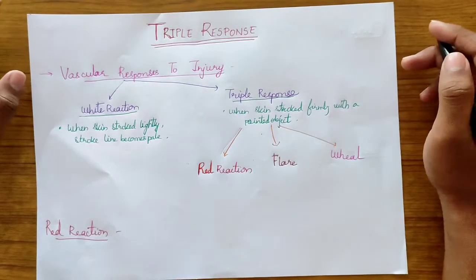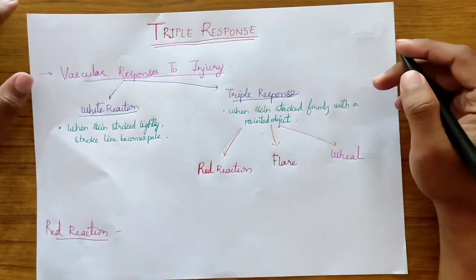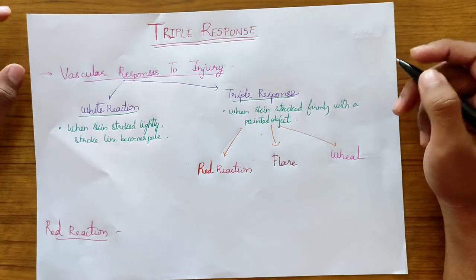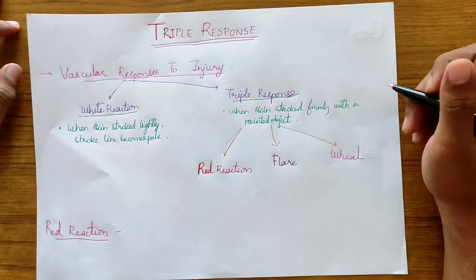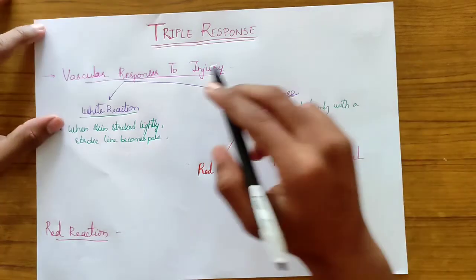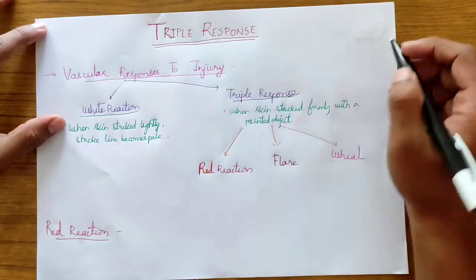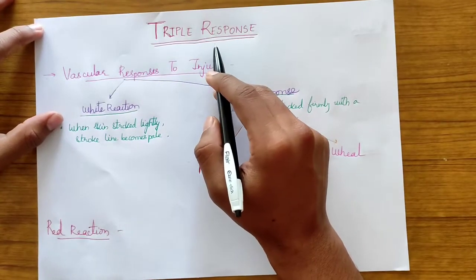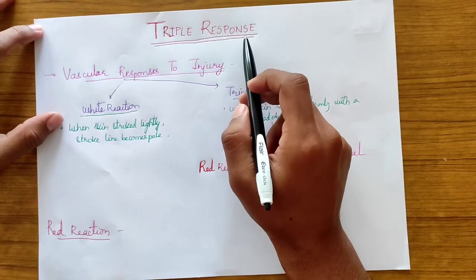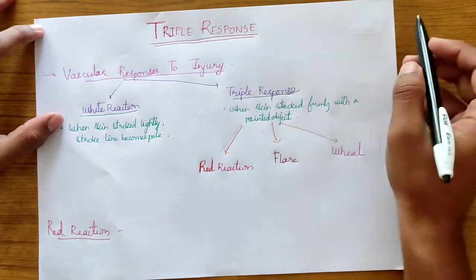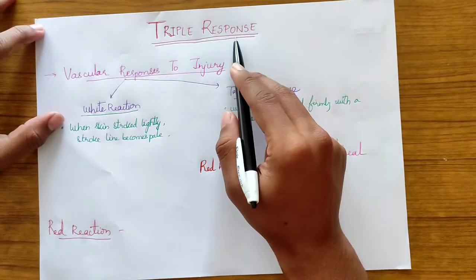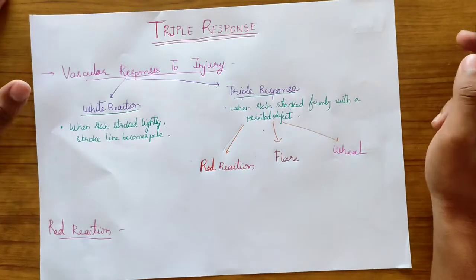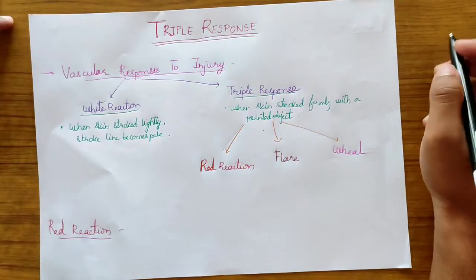Hello, hi and Namaskara. My name is Kirtan and I am a 2nd year medical student studying in a government medical college. Today I will be talking about the topic triple response. It is one of the easiest and shortest topics in the cardiovascular system unit and can be asked as a 3-marker question in the board examination. So let's start.